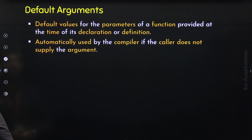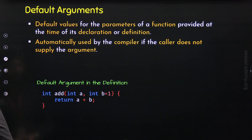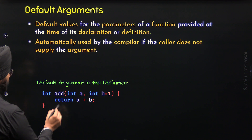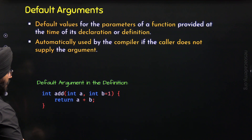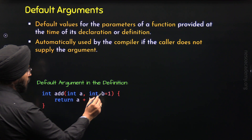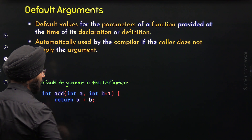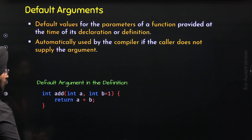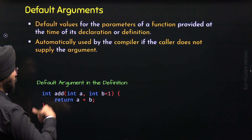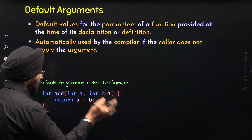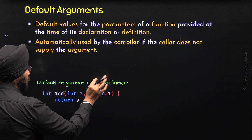Now let's understand how we can pass default arguments to a function. We can pass default arguments to a function at the time of definition. Here I have defined the add function with two parameters, a and b. Parameter b has the default argument of 1. The default argument is provided with the help of the assignment operator. So when we call this function and choose not to provide the argument to this parameter, the compiler will automatically assign this default argument.